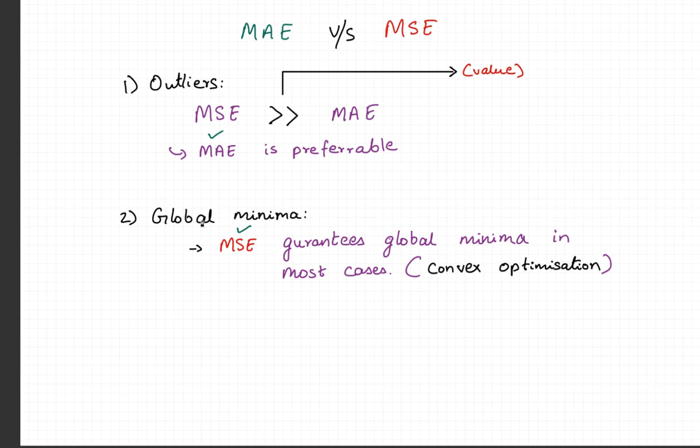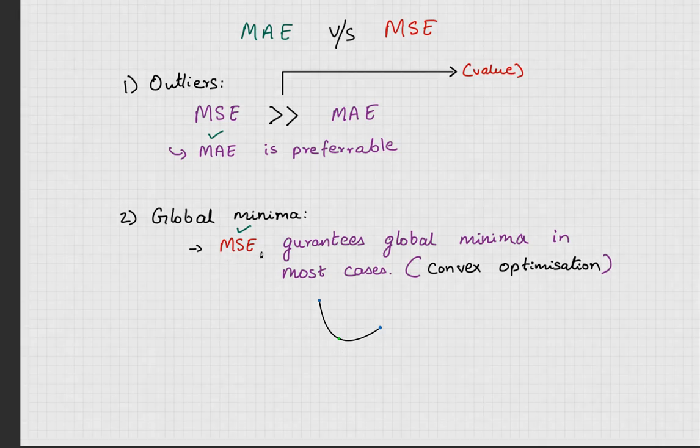But in general, we always like to attain a global minima. The mean square error almost guarantees a global minima if one exists, especially in the convex cases, chiefly because since it's a square error, it takes some sort of parabolic shape. It is easier to find the gradient here, the global minima or the minima out here. In this case, mean square error is much more useful.